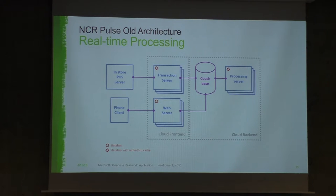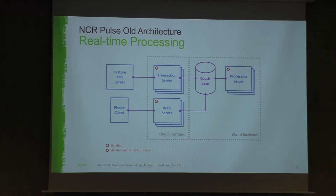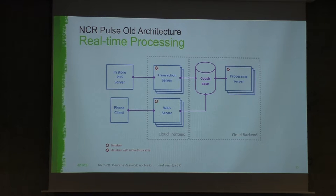To optimize some parts, we use write-through caching. That means that when processing a batch of transactions, if we are modifying the same check multiple times in a batch, we don't need to re-read it back from Couchbase each time — we simply do the write-through cache.